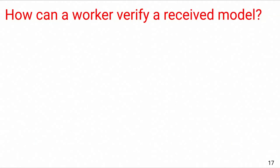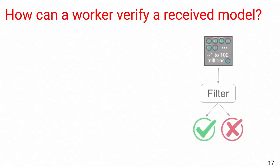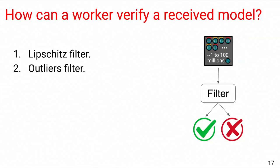So now the question is, how can a worker verify the legitimacy of a received model? Ideally, we would like to have some filtering technique like this. Basically, when a worker receives the model, it passes this model through a filter which can somehow magically tell whether this model is good or not. If it is good, the model passes the filter and the worker can use this model safely to compute its gradient. Otherwise, the worker would pull another model, probably from another server, hoping to get a correct model this time. For this, we designed two filters that work hand-in-hand to detect Byzantine models: the Lipschitz filter and the Outliers filter.